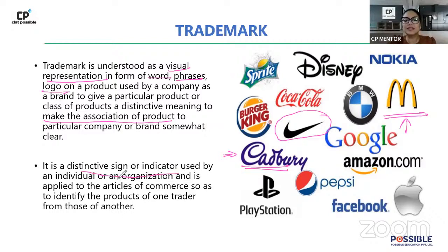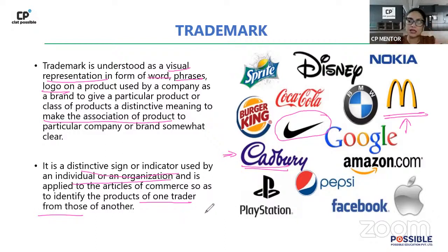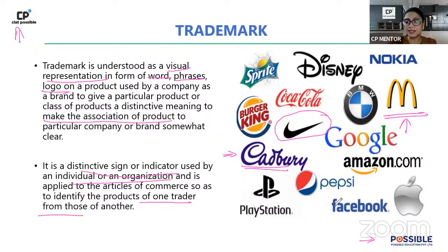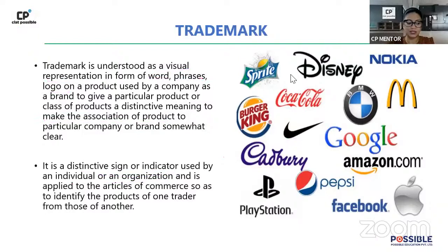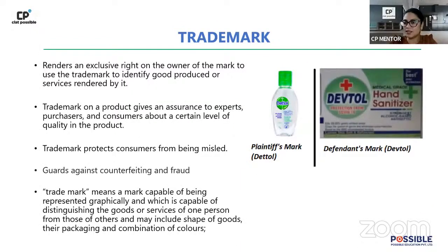A trademark is a distinctive sign indicating that a product or service belongs to an individual or organization. It helps you identify products of one trader from another — for example, distinguishing Cadbury's from Nestlé's. Our own Clad Possible logo is also a trademark: the moment you see the CP logo on any book or sheet, you know it's made by Clad Possible.